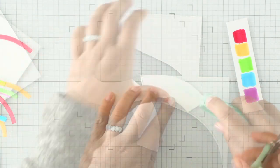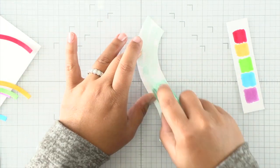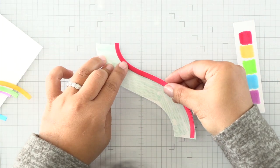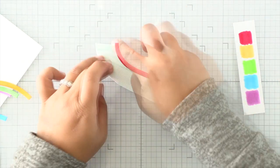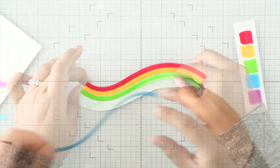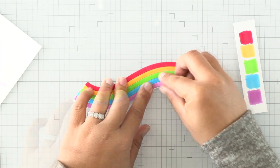I'm just adding some dot tape runner adhesive all over this band, and then I'll piece together my rainbow starting with the red, then the yellow, green, blue, and then purple. Once we have that last band on there, I can go ahead and trim away that extra cardstock.